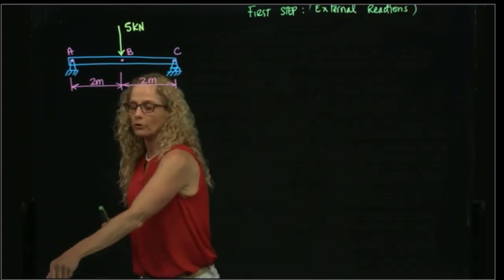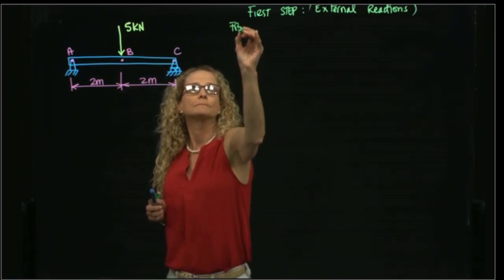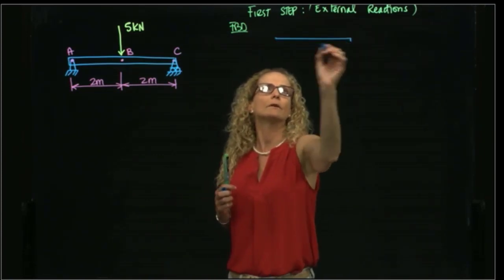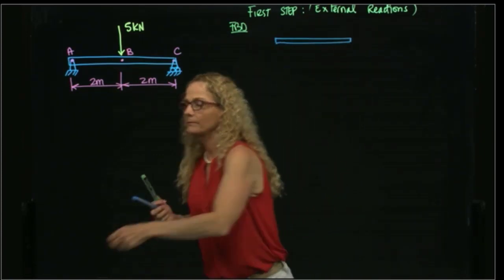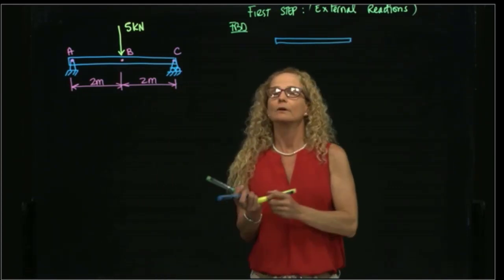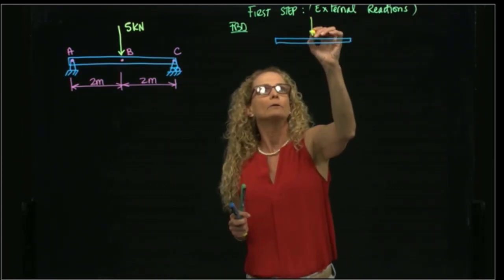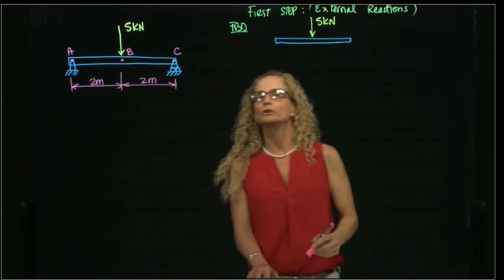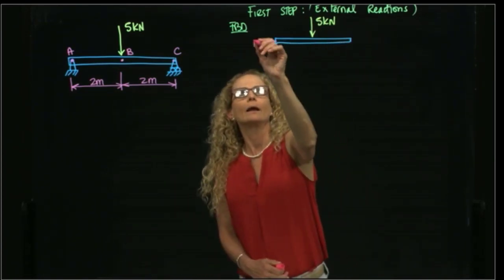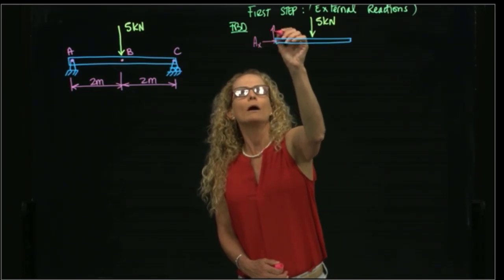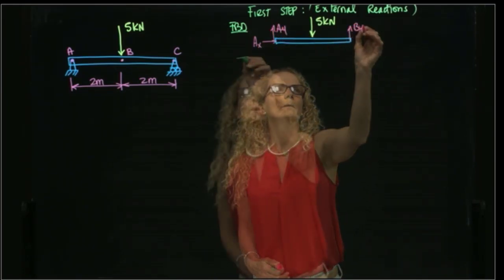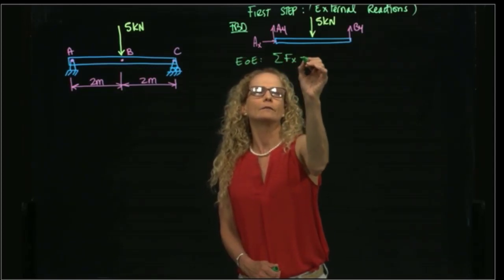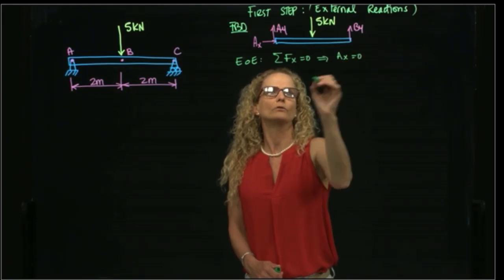We draw the free body diagram of the whole beam. It is very easy and straightforward. We have our external load, which is 5 kN. And then I have my reaction forces, which are AX, AY, and BY. For the equations of equilibrium, I take forces in X equals 0, which means that AX is equal to 0.